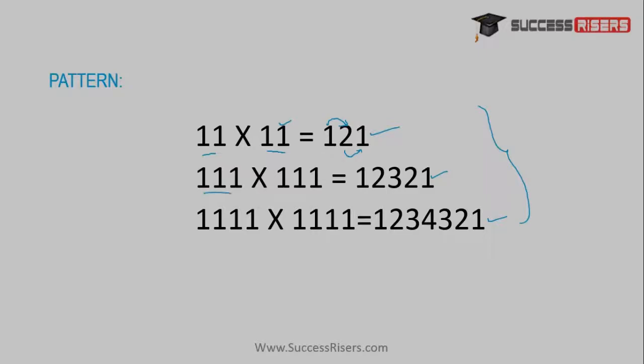Here are three digits, so multiplication goes high up to three and then goes down up to one. Similarly, here are four digits, so multiplication goes high up to four and then goes down up to one.